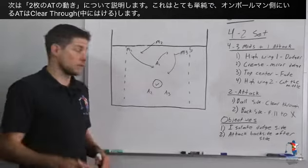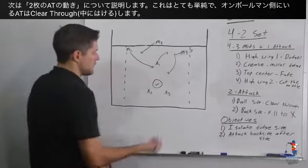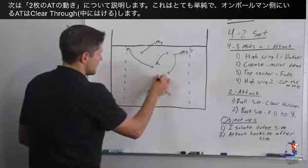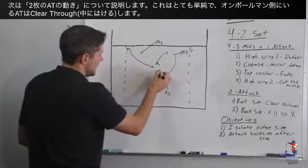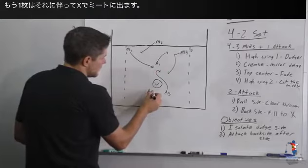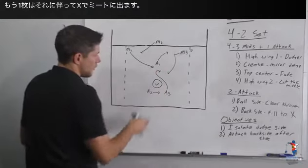Next we're going to talk about the rules for our two attackmen down here and it's very simple. Whoever's ball side is going to clear through and fish hook or as our players like to call it a candy cane and the other player is going to fill to X to be the forward outlet.